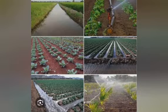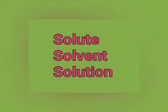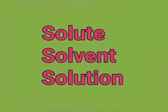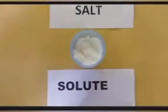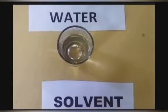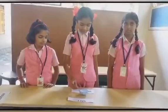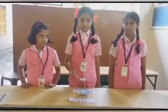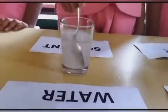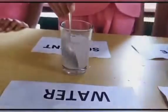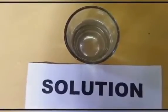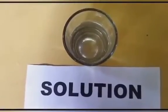Hence, water is called the universal solvent. First, let us understand what is solute, solvent, and solution. For example, in salt solution, salt is the solute and water is the solvent. If we mix water and salt together, we get salt solution — salt acts as the solute and water acts as the solvent.